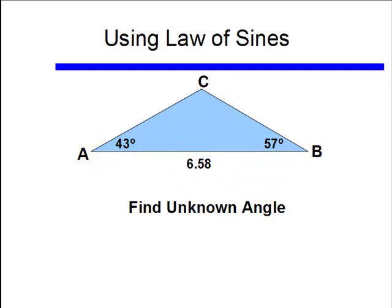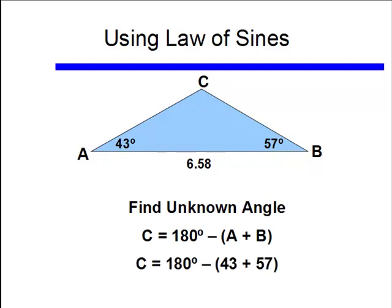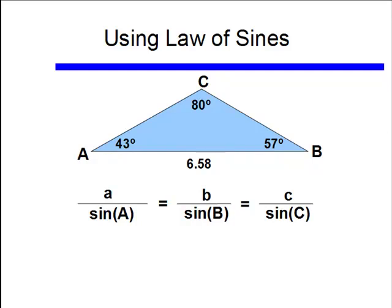Well, what I'd like you to do is anytime you're given two angles, just before you even start with the law of sines, find that unknown angle. Just like we did before, that angle is going to be 180 degrees minus the sum of 43 degrees and 57 degrees, and that will still be 80 degrees.